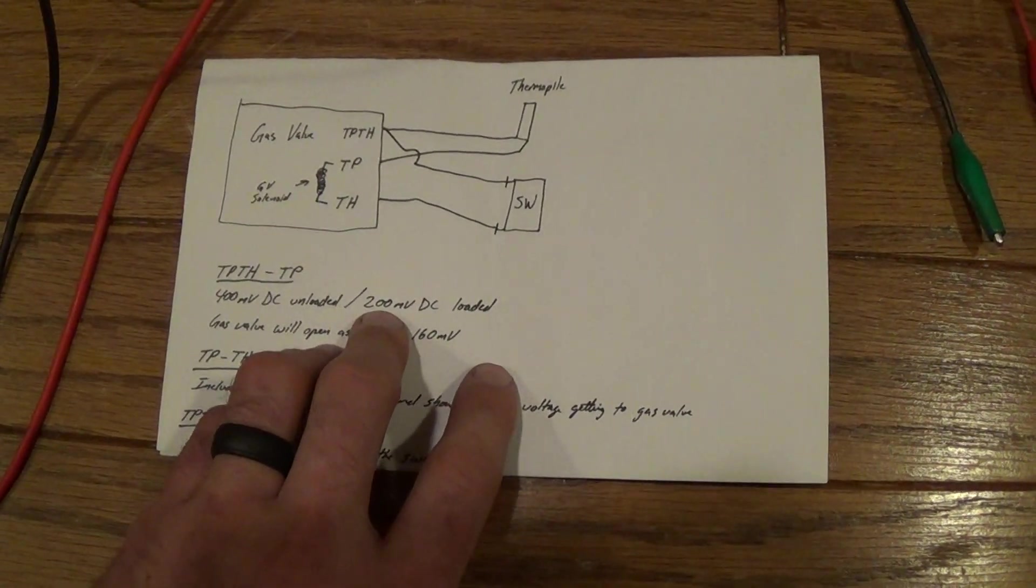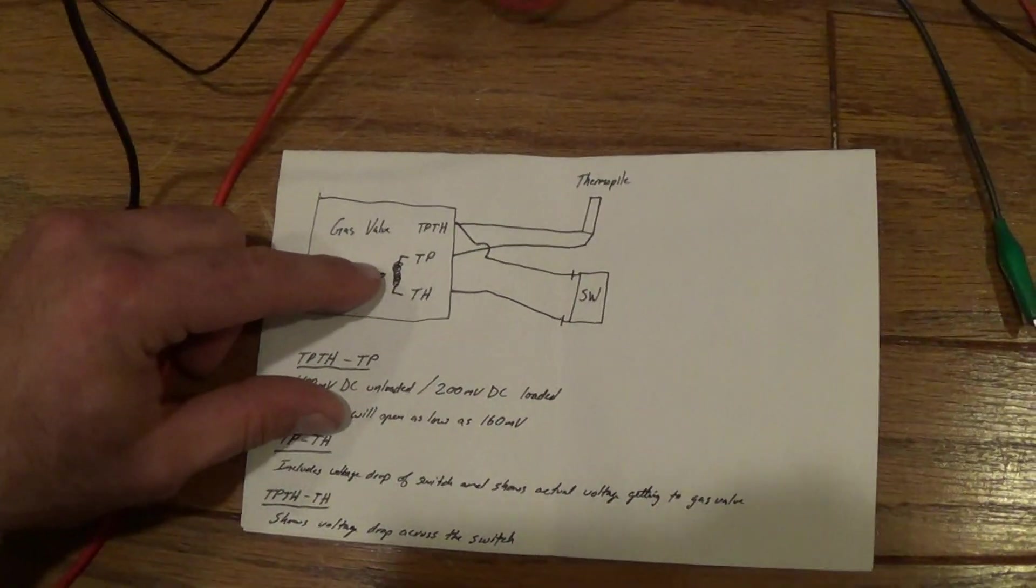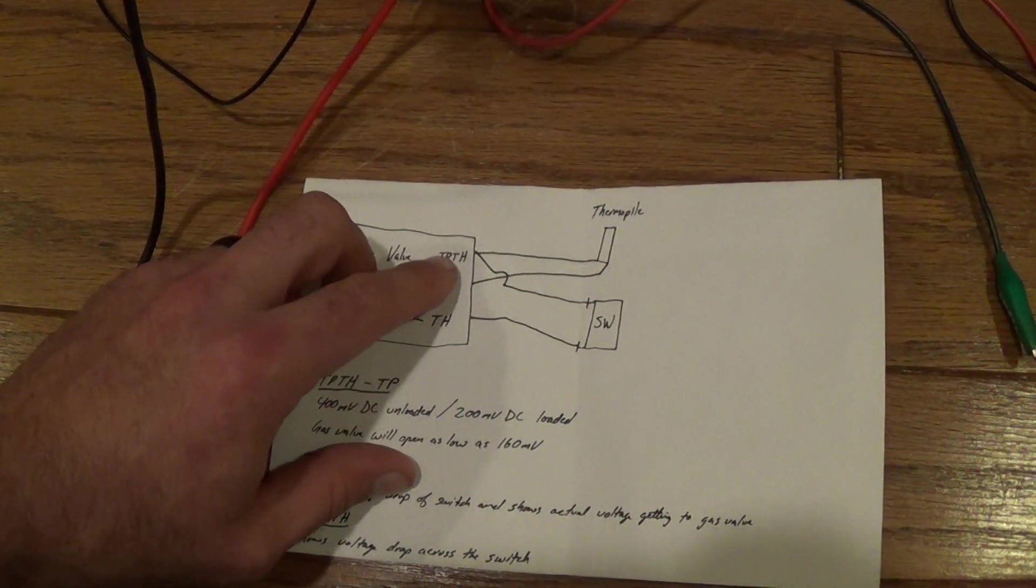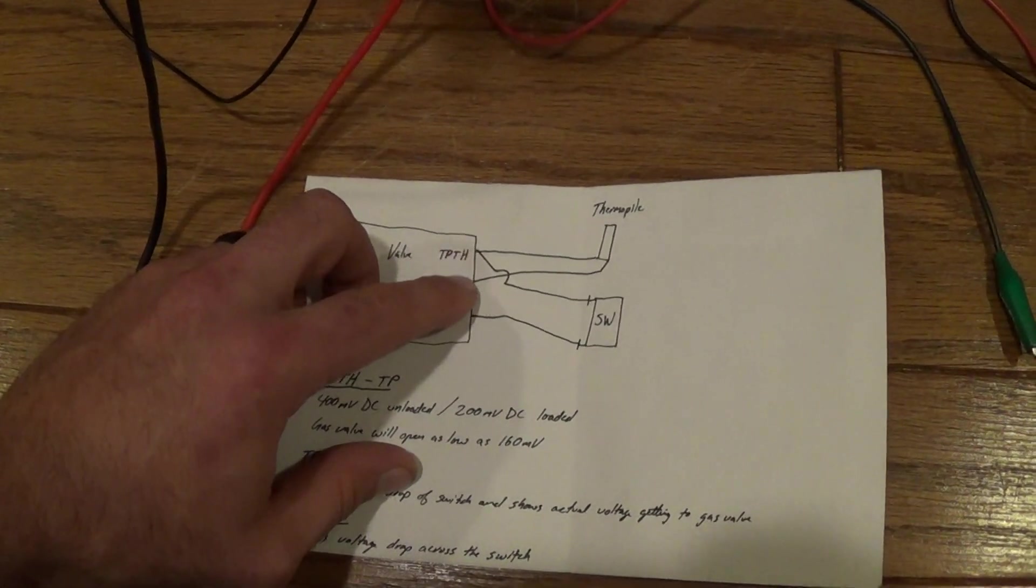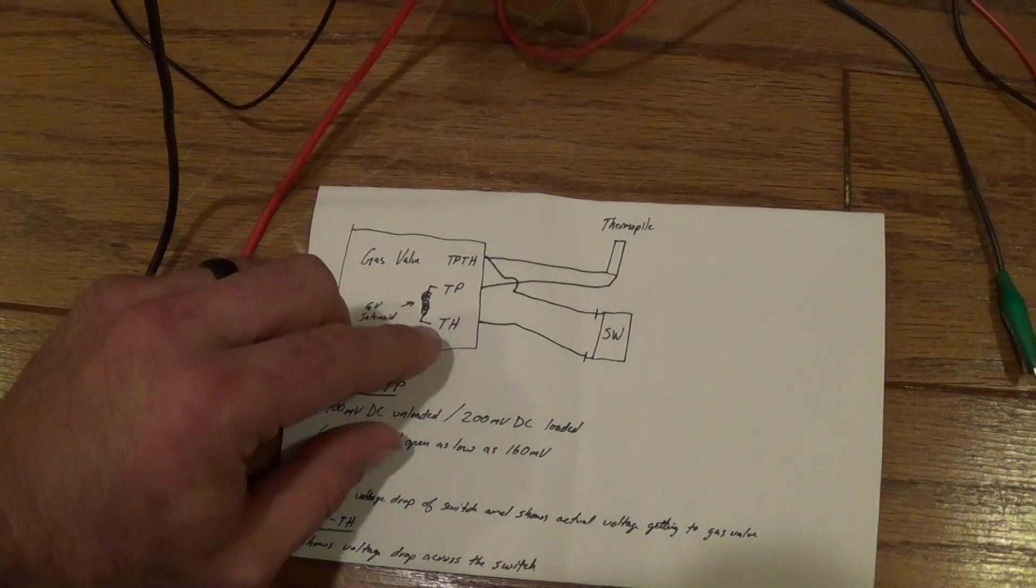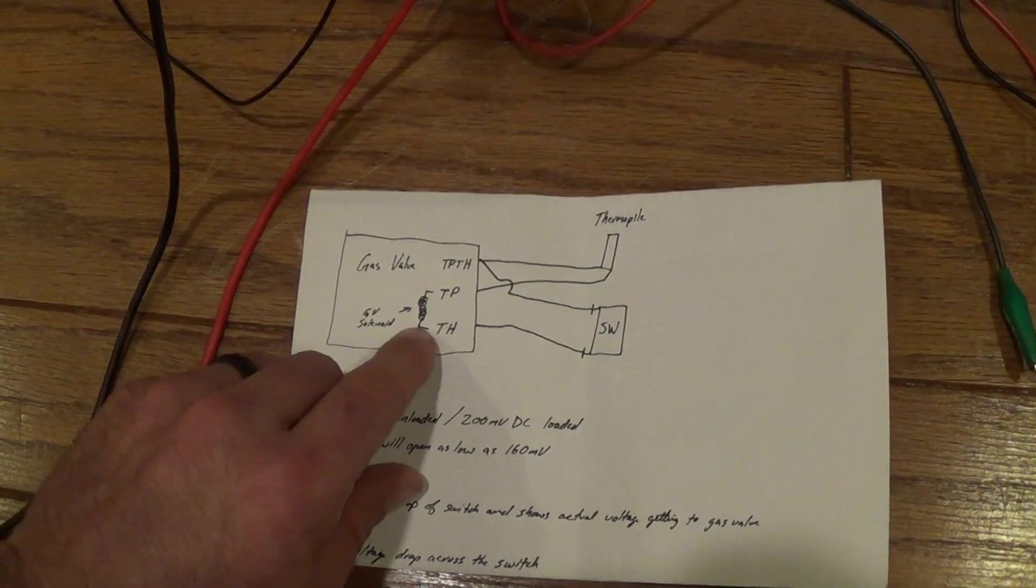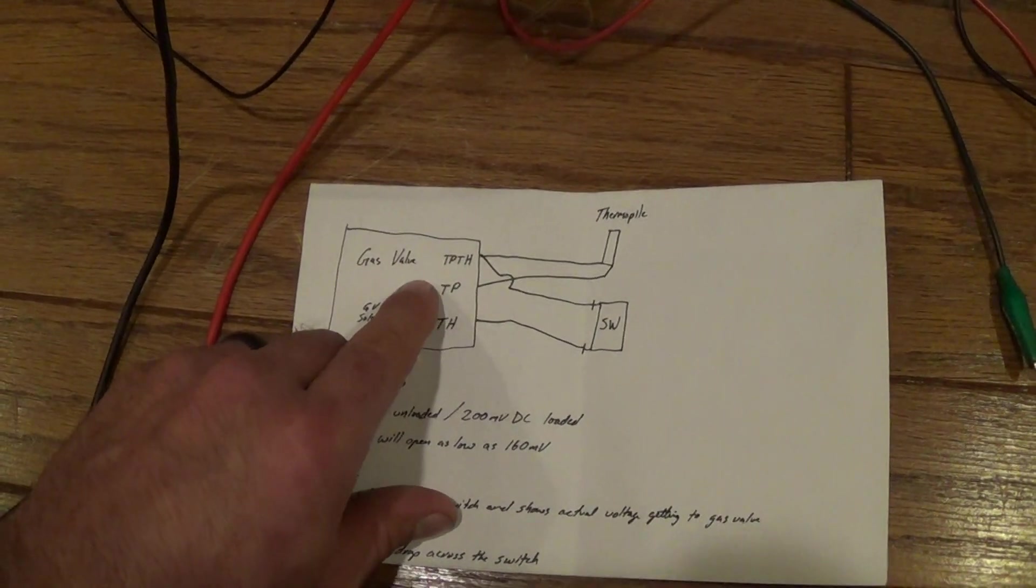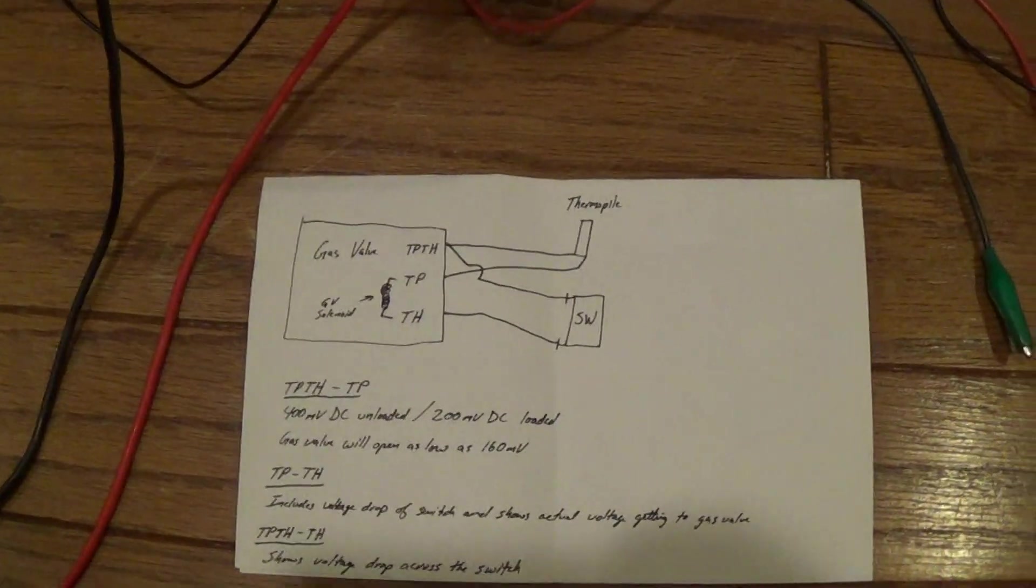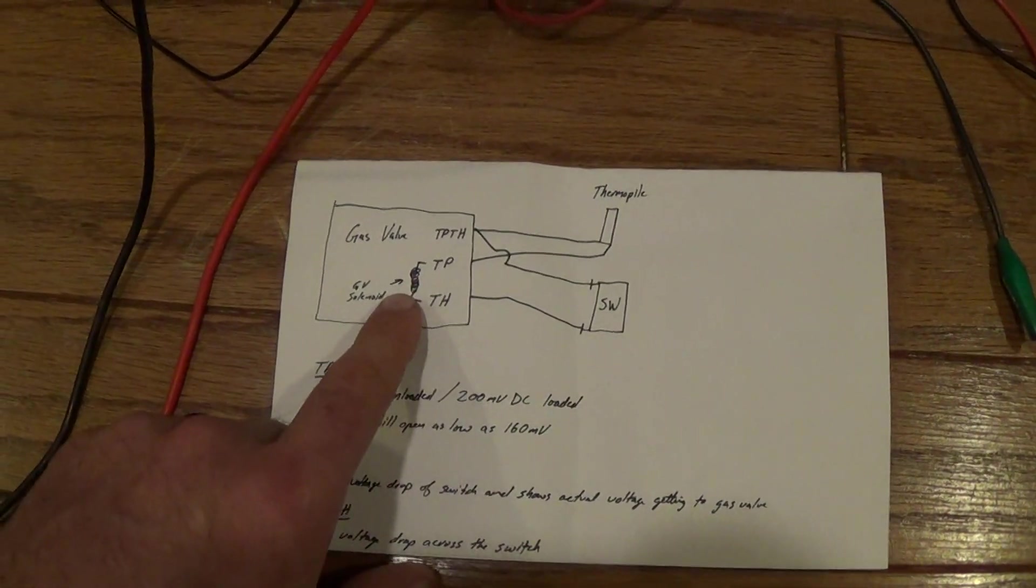Now the best way to actually measure the voltage of the thermopile is not to measure the thermopile terminals, because that's not telling you the voltage drop through the switch. The best way to measure the voltage the gas valve is actually seeing—on the gas valve solenoid, which I've drawn as this coil—is to measure between TP and TH. That's going to be the most accurate measurement.